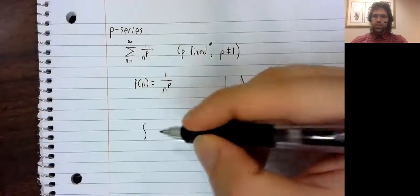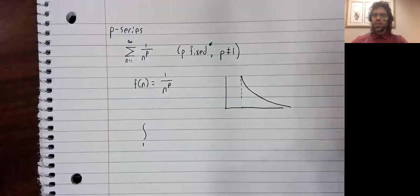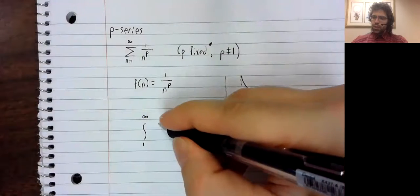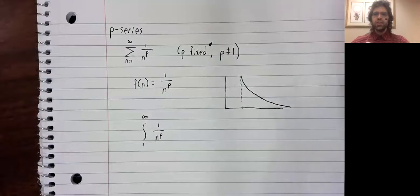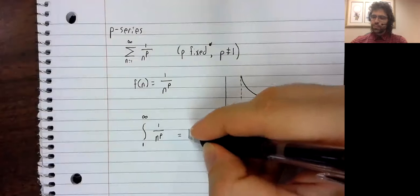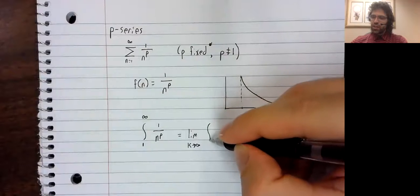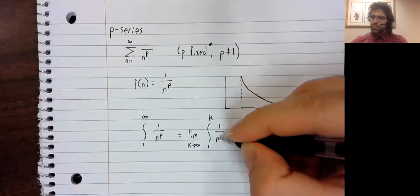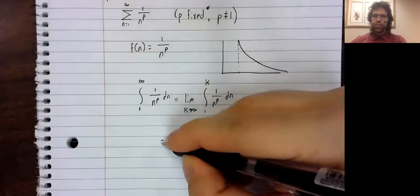So we integrate from, we need to stay away from zero. So let's say from one to infinity, one divided by N to the P. We replace the infinite sign with a finite number K and take the limit as K goes to infinity.